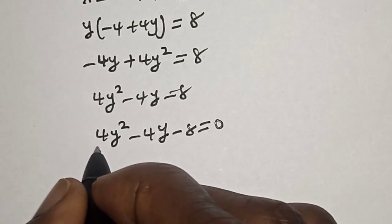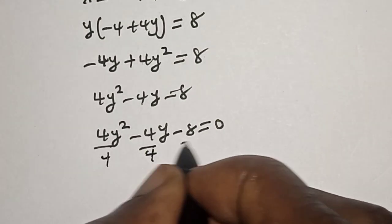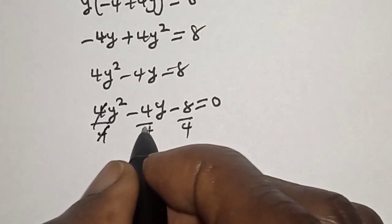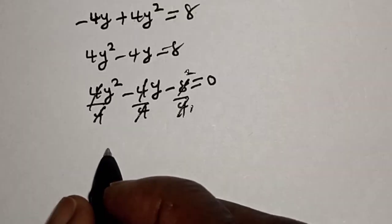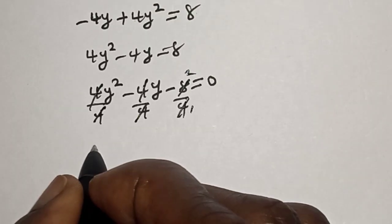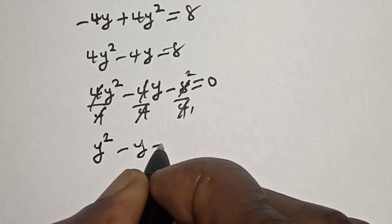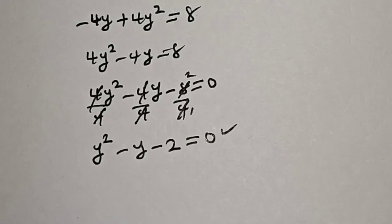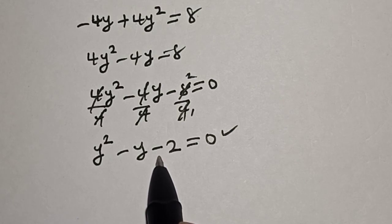Bringing 8 to this side: 4y² minus 4y minus 8 is equal to 0. Now we can reduce this by dividing everything by 4, giving us y² minus y minus 2 is equal to 0. This is a quadratic equation which can be solved using the quadratic formula or factorization method.